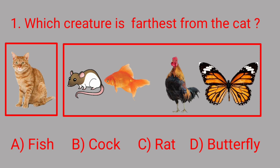So as we came to know that the distance between the cat and the butterfly is the most, butterfly is farthest from the cat. So let's take option D.